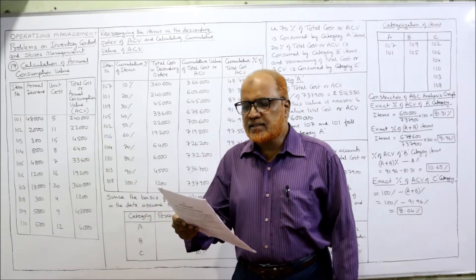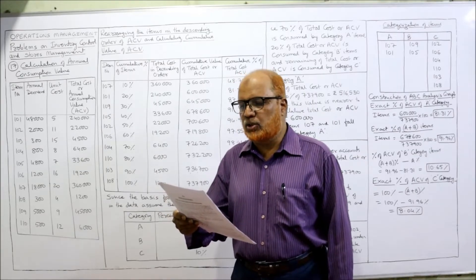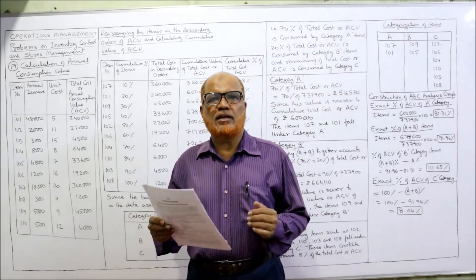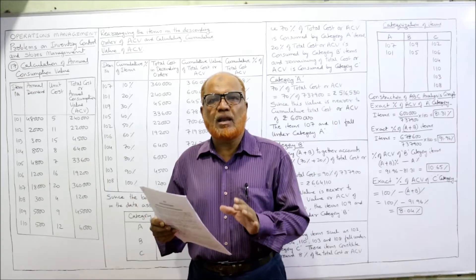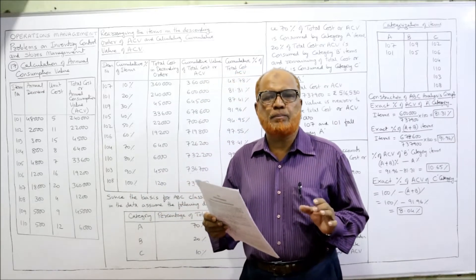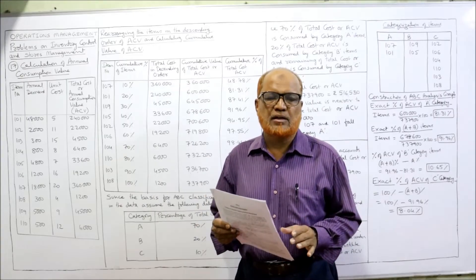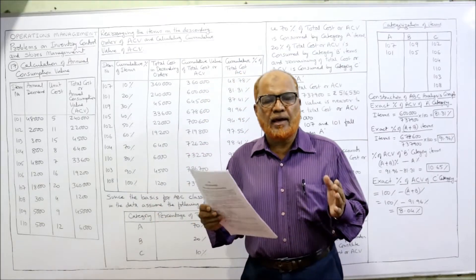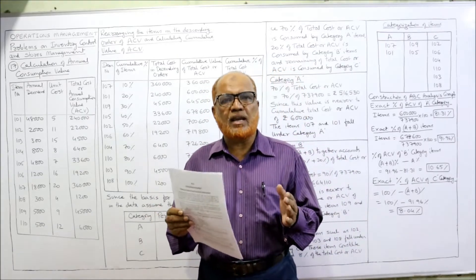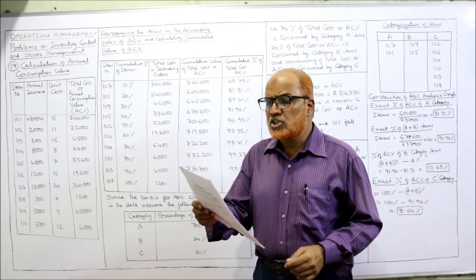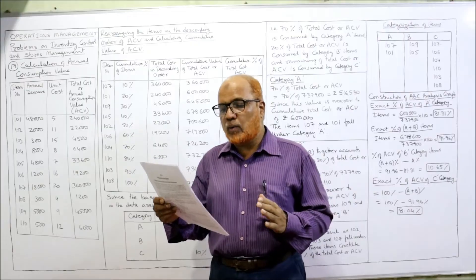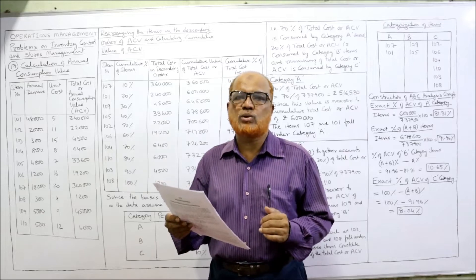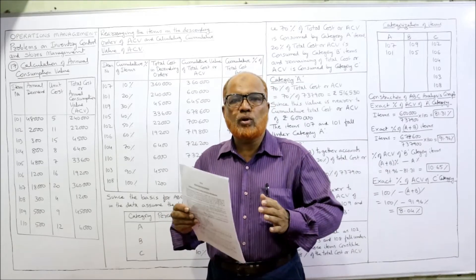See the 17th problem: categorize the inventory as ABC based on the usage of items using ABC analysis. So far we have done problems on calculating EOQ, stock levels, etc., but this last problem is on selective control. Different selective methods I have explained in the last theory videos: ABC analysis, XYZ analysis, VED analysis, FNSD analysis. This problem gives item numbers 101 to 110, with unit cost and annual demand for 10 items.